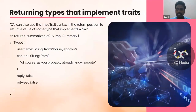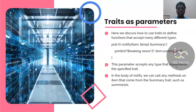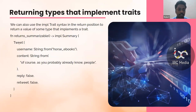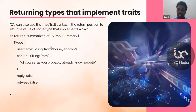Now, returning traits — if we can take a trait as a parameter, we can also return it. Returning types that implement the trait: previously we wanted to accept any data type that implements a particular trait, and here we want to return types that implement the trait. We create a function `return_summarizable` that returns `impl Summary`, meaning the data type that refers to the trait. We want to return a Tweet struct.